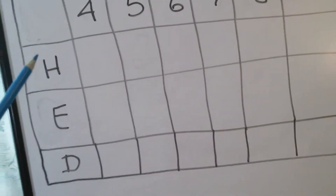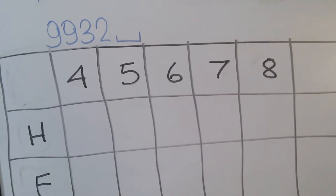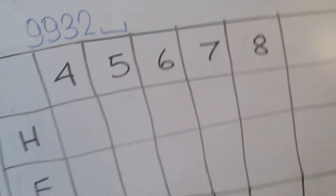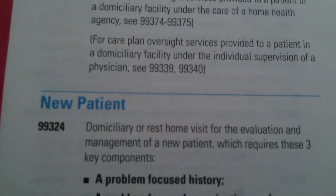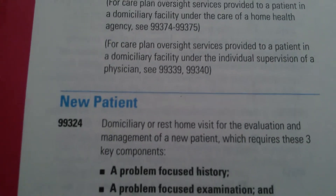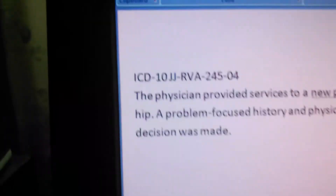We're going to examine all of them starting with history — the first row. Each code gets a check mark or an X based on what we find in the problem. For 99324, it says 'a problem-focused history,' and in our problem it says 'a problem-focused history' — so number four gets a check mark: yes.